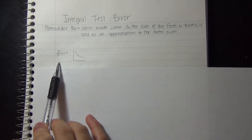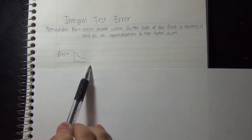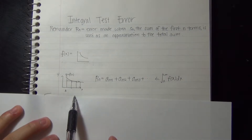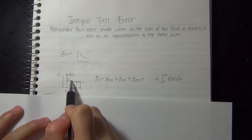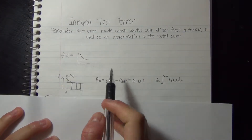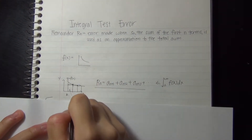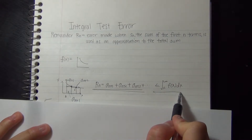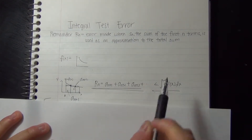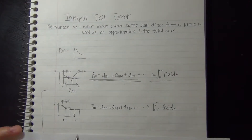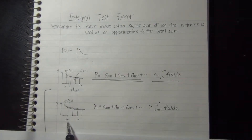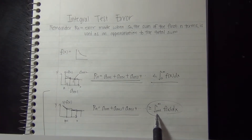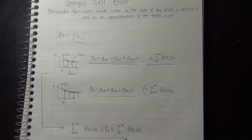If we assume that f(x) looks like a decreasing function — which is required for the integral test — we'll first look at a graph that starts from n and uses the right endpoints to get the area. So Rn equals a_(n+1) + a_(n+2) + ..., and the sum of those will always be less than the integral of f(x) from n to infinity. If we look at another graph starting from n+1 using left endpoints, those are always greater than the integral of f(x) from n+1 to infinity. That's where we get the equation for the remainder estimate.